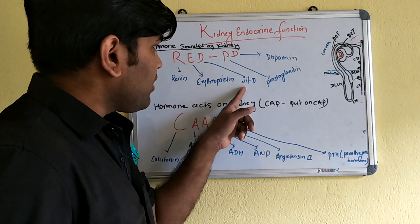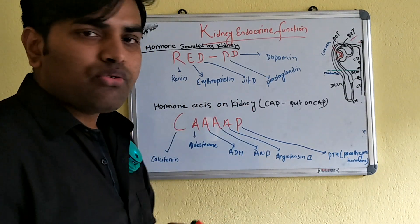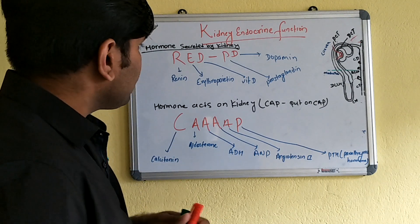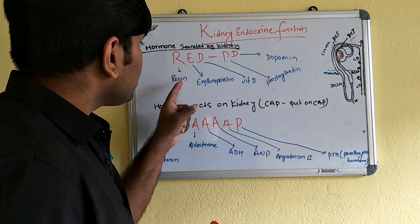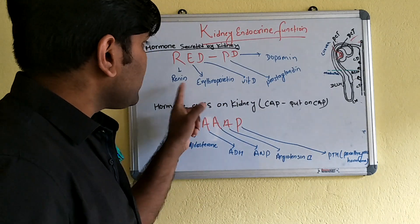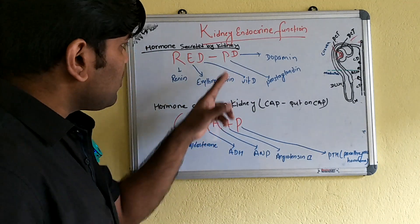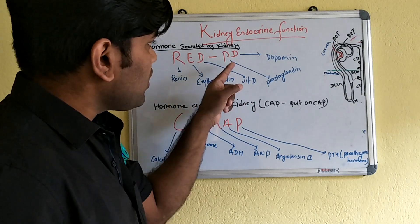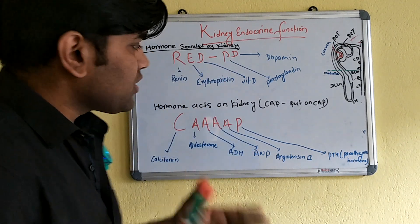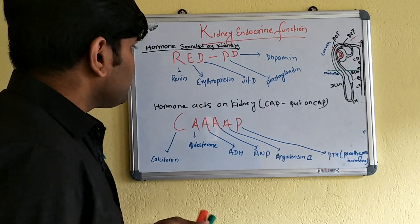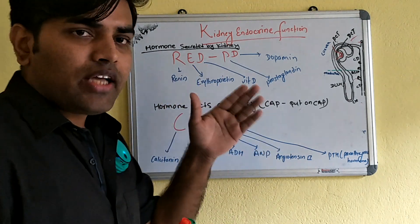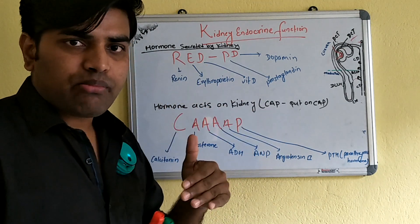The hormones released by the kidney are renin, erythropoietin, and vitamin D. You can make a formula 'RED' to remember these three main important hormones. There are also accessory hormones: prostaglandin and dopamine.